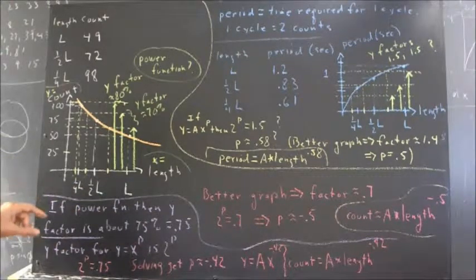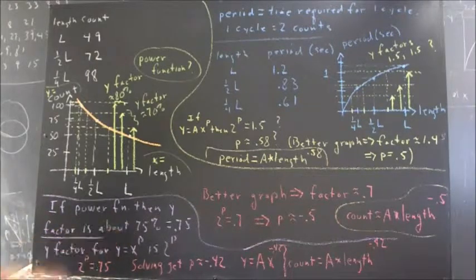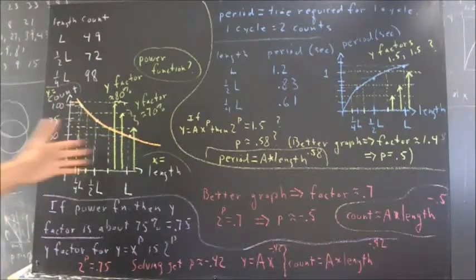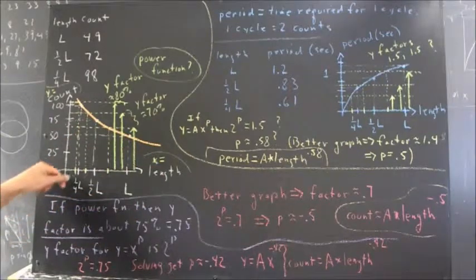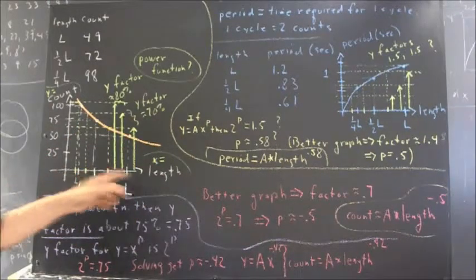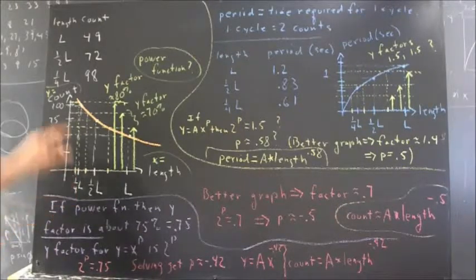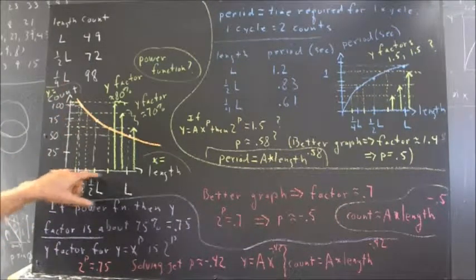If the power function factor is about 75%, which is what we get from this graph, and what we did up here was we picked an x value, not one of our data values, but picked an x value and doubled that and then doubled that.